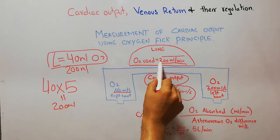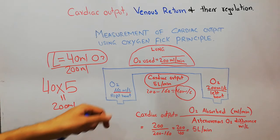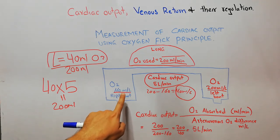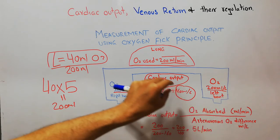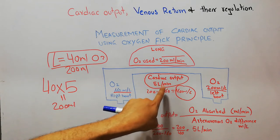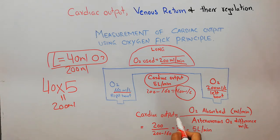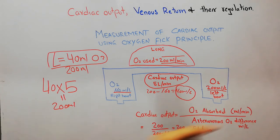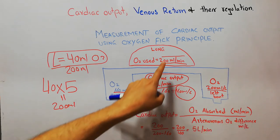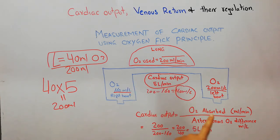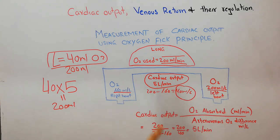We know these figures: the amount of oxygen used per minute measured by an oxygen meter, the concentration of oxygen in the right side of the heart, and the concentration on the left side. Using the Fick equation — cardiac output equals oxygen absorbed divided by the arteriovenous oxygen difference — we get: 200 ml per minute divided by 40 ml per liter equals 5 liters per minute.